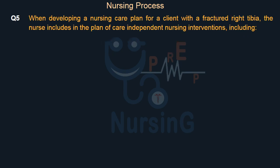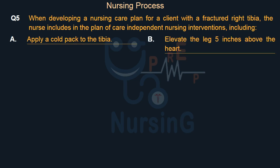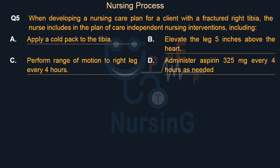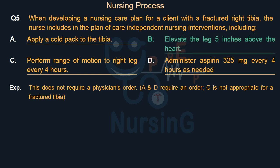When developing a nursing care plan for a client with a fractured right tibia, the nurse includes independent nursing interventions — Option A: Apply a cold pack to the tibia. Option B: Elevate the leg 5 inches above the heart. Option C: Perform range of motion to right leg every 4 hours. Option D: Administer aspirin 325 mg every 4 hours as needed. Right answer is Option B: Elevate the leg 5 inches above the heart. This does not require a physician's order. A and D require an order; C is not appropriate for a fractured tibia.